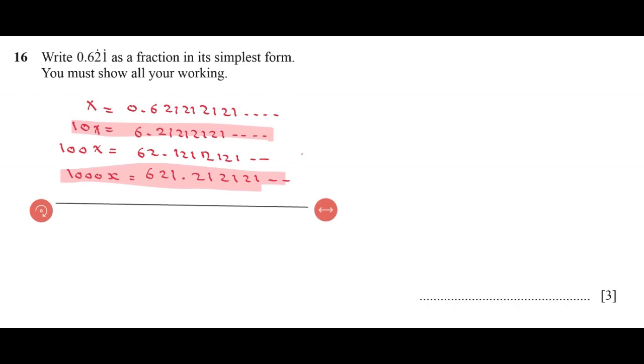621 minus 6 equals 615. All the decimals will be cancelled. 1000 minus 10 equals 990x.